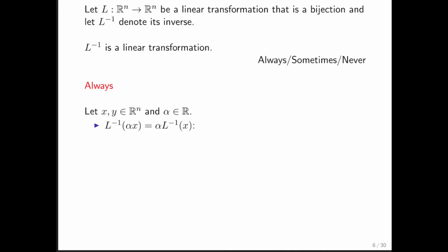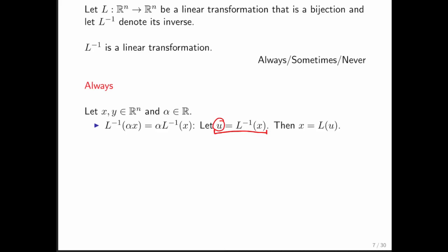There are two questions that we need to answer. The first one is: is it the case that if you multiply x first by alpha and then you invert it, you get the same thing as if you invert first and then you multiply by alpha? How do we prove that? Well, we start by saying we know that L inverse transforms x. Let's call the result of that u. And what we then know about u is that if you put u back into L, you better get x back.